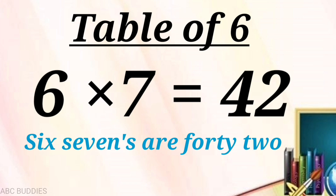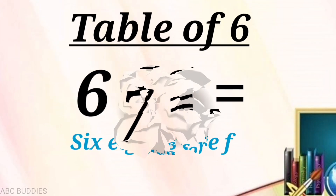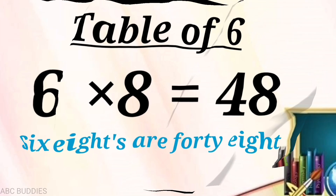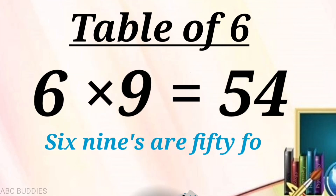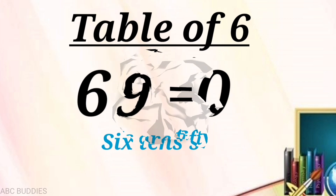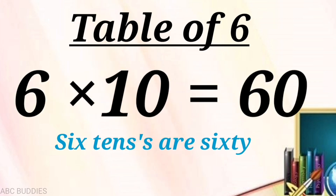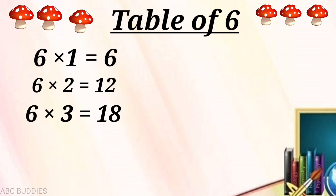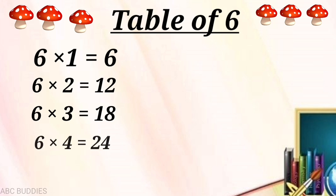Six sevens are forty-two. Six eights are forty-eight. Six nines are fifty-four. Six tens are sixty. Let's learn again. Six ones are six. Six twos are twelve. Six threes are eighteen.